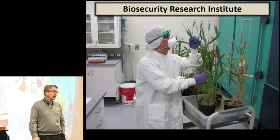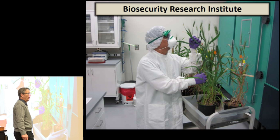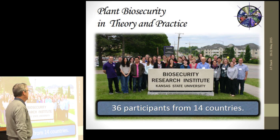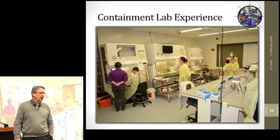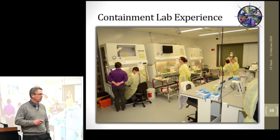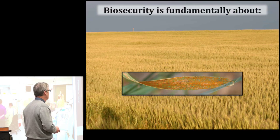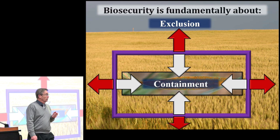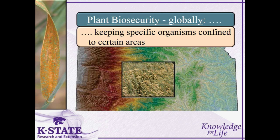I teach a course in May — a one-week short course called Plant Biosecurity in Theory and Practice. Last May we had 36 participants from 14 countries. It's an interactive week, including training in the BSL-3 training lab. I'm mentioning this because I still have a few scholarships — if any of you would like to experience this, talk to me and we'll get you into the course this year. So what is biosecurity? It's fundamentally about two things: containment and exclusion — keeping specific organisms confined to certain areas, and keeping certain areas free of specific organisms.